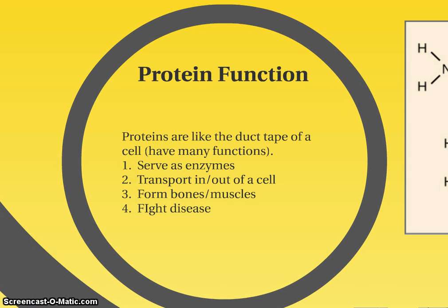What do proteins do for us? I always think of proteins like the duct tape of a cell — there are so many things that proteins do for our bodies. They can serve as enzymes, which speed up chemical reactions. They can help certain materials get into and out of our cells. They help to form bones, they're a main component of our muscles, and they help us fight disease by forming different antibodies.